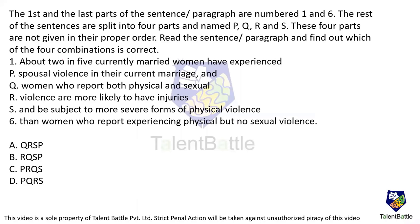Now the last question is a para-jumble with the first and last sentences fixed. We need to arrange four statements P, Q, R, S in between. The first fixed statement says: 'Two in five currently married women have experienced...' — then we look at which statement follows. P says 'spousal violence in the current marriage' — that fits, as they are talking about married women experiencing violence.